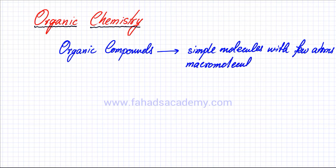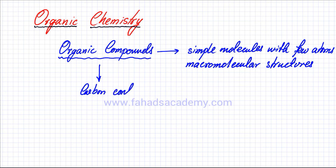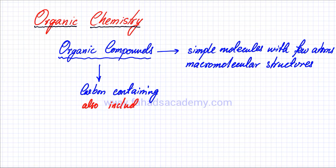Organic compounds can also be different macromolecular structures, which can contain hundreds of thousands of different atoms joined together. So what are organic compounds? Organic compounds have one thing in common: they all contain carbon. So these are all carbon-containing structures. But it's not limited to carbon — carbon is the fundamental building block of organic compounds, and they can also include other elements.